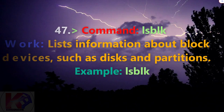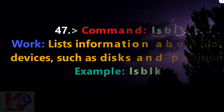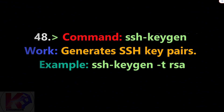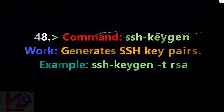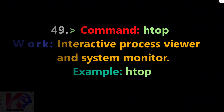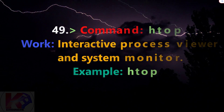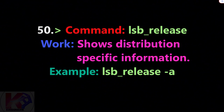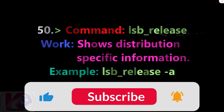Command lsblk: lists information about block devices such as disks and partitions. Example: lsblk. Command ssh-keygen: generates SSH key pairs. Example: ssh-keygen -t rsa. Command htop: interactive process viewer and system monitor. Example: htop. Command lsb_release: shows distribution-specific information. Example: lsb_release -a.